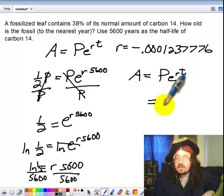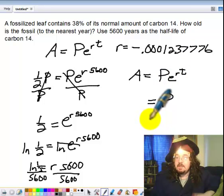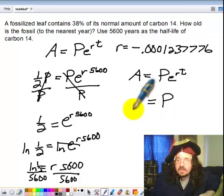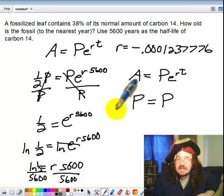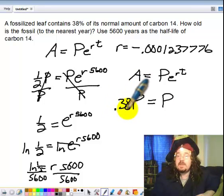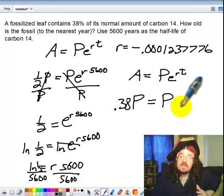And I don't know how much I started with, so I put P, but however much I started with, at the end, when I look at this, I have 0.38P, 38% of the original amount.